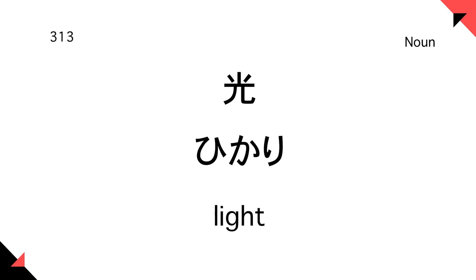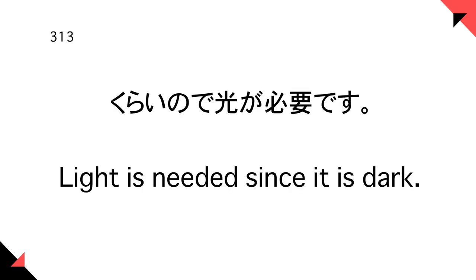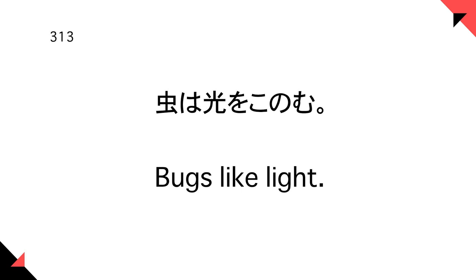光 — Light. 暗いので光が必要です。 Light is needed since it is dark. 虫は光を好む。 Bugs like light.